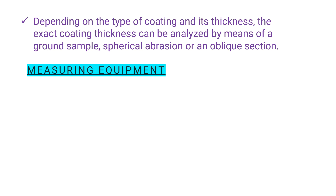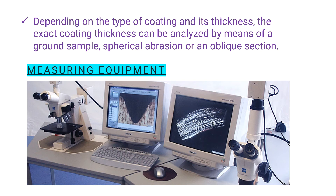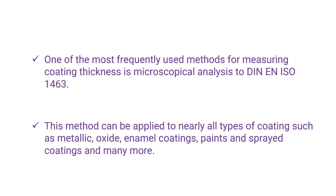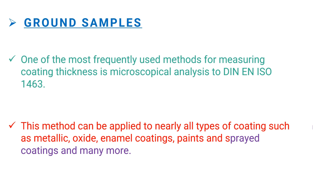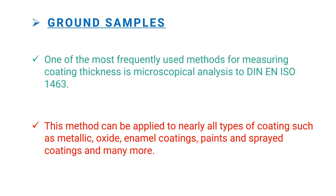The equipment used is an incident light microscope with magnification between 50 to 1000 times, and a stereoscopic microscope up to 100 times, with a state-of-the-art digital recording and image processing system. Ground samples are one of the most frequently used methods for measuring coating thicknesses using microscopical analysis. This method can be applied to nearly all types of coatings such as metallic, oxide, enamel coatings, paint, sprayed coatings, and many more. This measuring procedure is well suited to coating thicknesses greater than 3 micrometers.